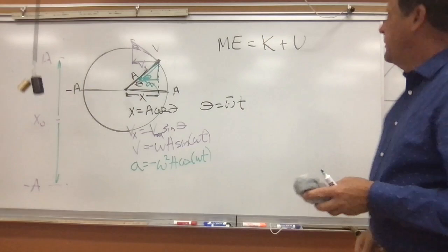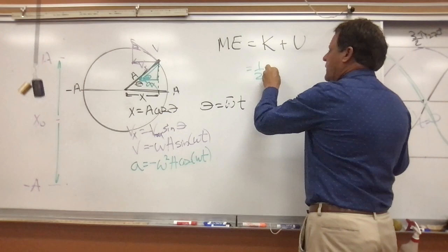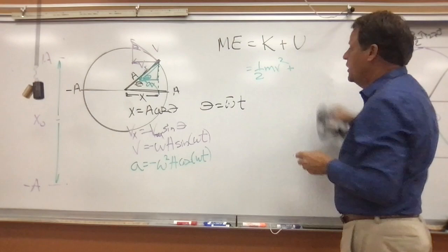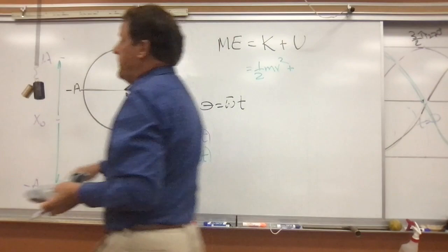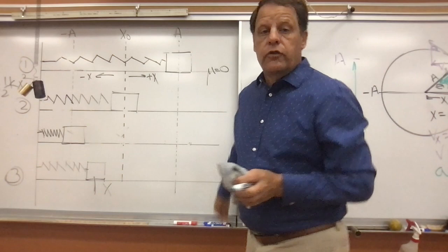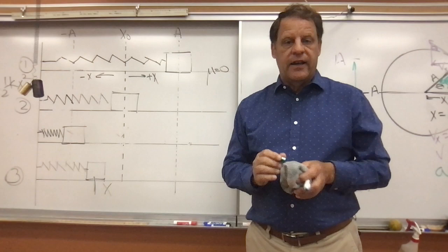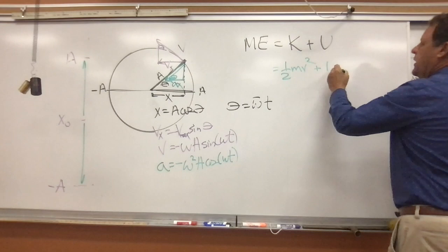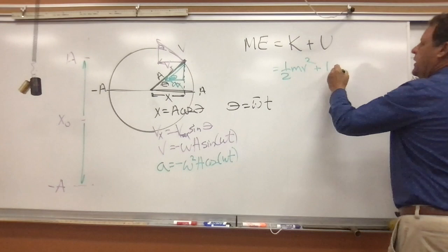In the absence of any friction or air resistance, we're going to have mechanical energy. We have one half mv squared — that velocity is changing over time — and we're also going to have potential energy. Let's think about this object moving horizontally so we don't have the combination of mgh and one half kx squared. Moving horizontally on a frictionless surface, the potential energy is just one half kx squared.